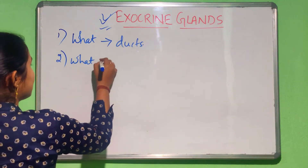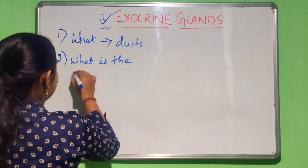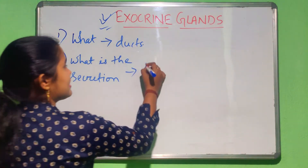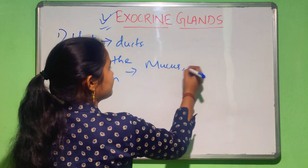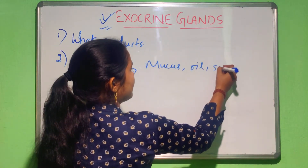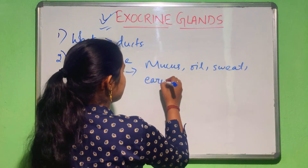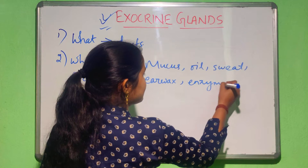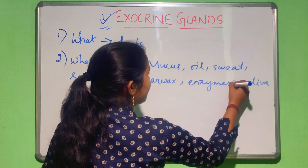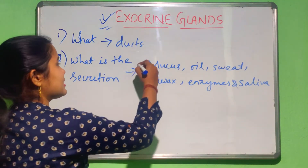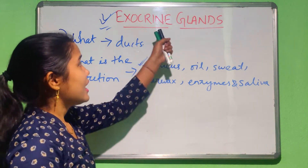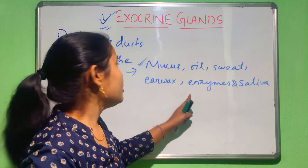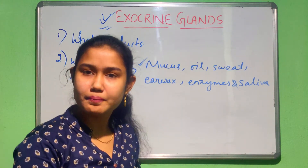What do exocrine glands secrete? These exocrine glands secrete mucus, oil, sweat, earwax, enzymes — particularly digestive enzymes — and saliva. These are the secretions of the exocrine glands, and these secretions go into ducts.